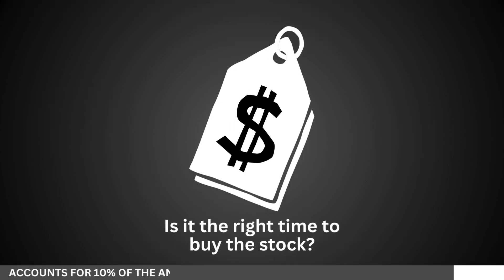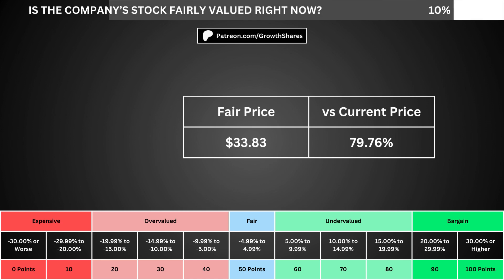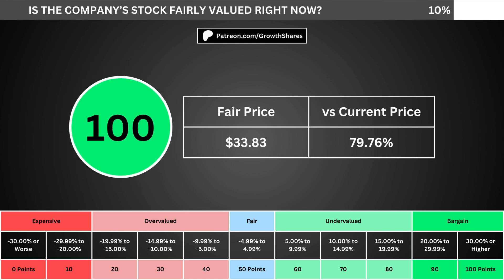But of course, we can't forget about the fair price and whether it's the right time to buy the stock. I use a discounted cash flow model taking into account a 10% margin of safety. That translates into the company's fair price and how many percentage points above or below its current price the stock is. When we compare those numbers with the table below, we can see where the company's stock lies in its intrinsic value spectrum right now.